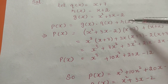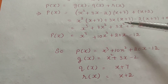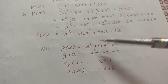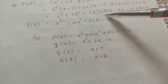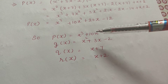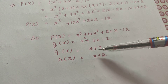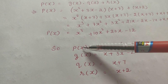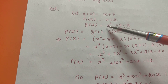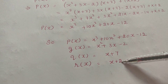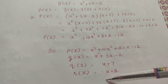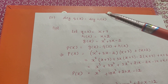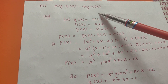Using p(x) = g(x)·q(x) + r(x), I calculated p(x) = x³ + 10x² + 20x − 12. You can verify this by dividing p(x) by g(x) to check that you get q(x) as the quotient and r(x) as the remainder. These four polynomials satisfy both the division algorithm and the given condition. Remember to always keep the degree of the remainder less than the degree of the divisor.